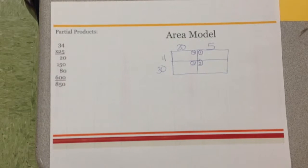For your fluency task today, you need to multiply two digit by two digit. You could have used partial products.